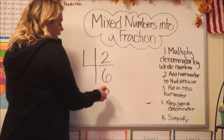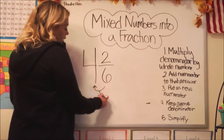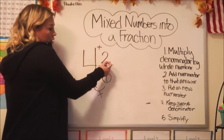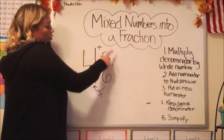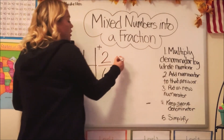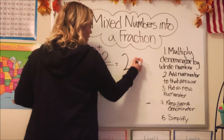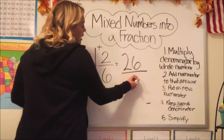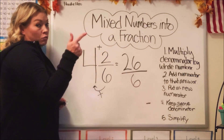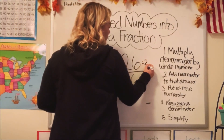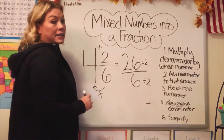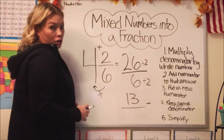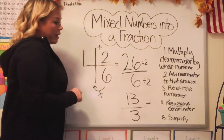We're going to do it this way first — simplify at the end. To begin, we multiply our denominator of six by the whole number of four: six times four is 24. We add our answer of 24 to the numerator of two: 24 plus two is 26. We put that as our new numerator and keep the same denominator, moving the six over. Both 26 and six are even numbers, so we divide by two: 26 divided by two is 13, and six divided by two is three. Our answer is 13 thirds.